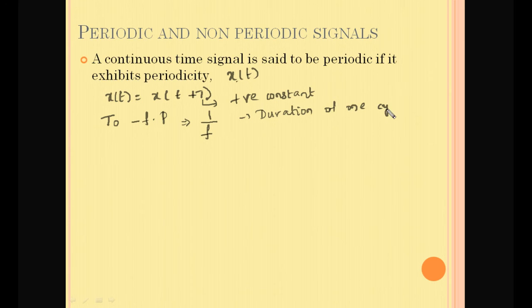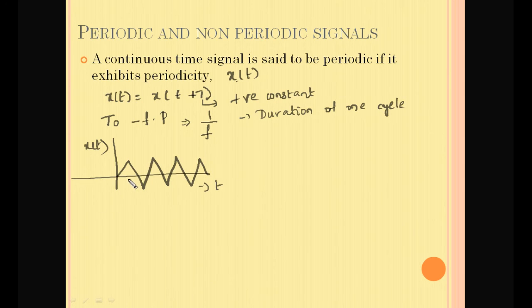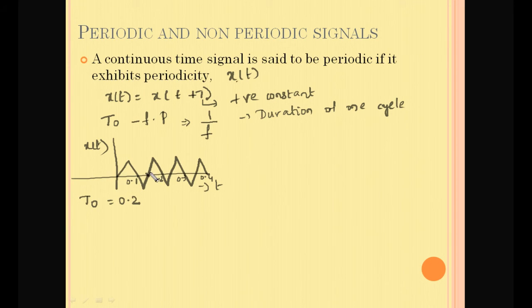Let us represent a periodic signal. We have a time axis t and the signal x(t) is represented with markings at 0.1, 0.2, 0.3, 0.4, and so on. If you look here, after 0.2 the signal is repeating. So such signals are called periodic signals, and the fundamental period of this example is 0.2, which shows the duration of one complete cycle.